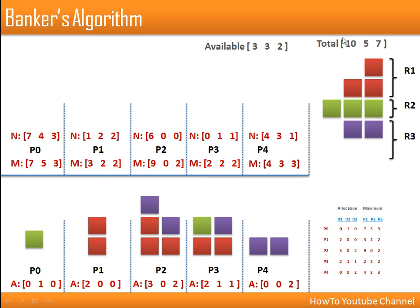To calculate available resources: from the total 10 of R1, subtract total R1 allotted to all processes. P0 has none, P1 has 2, P2 has 3, totaling 5, P3 has 2, totaling 7 allocated. So 10 minus 7 leaves 3 of R1 available. The same calculation applies to R2 and R3.